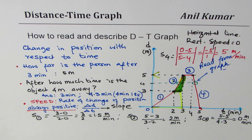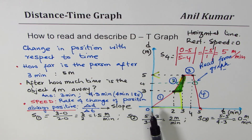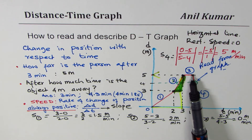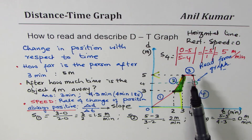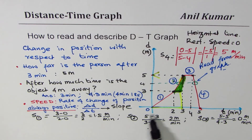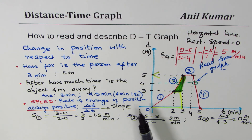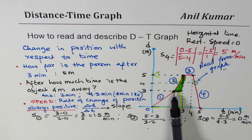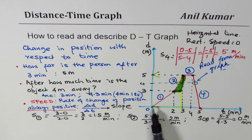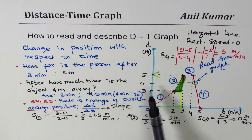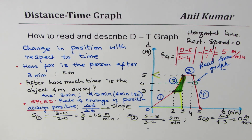I hope with this example you've understood Part 1: how to sketch a graph for a given situation — a person starting from a position, going away, increasing speed, being at rest at the turning point, and then returning. We can read the position at different times, or find when the object is at a certain distance.